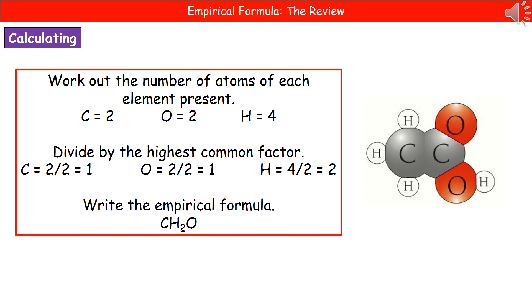Now, they could ask you to work out the empirical formula for one of these. And the way that you do that is, first step, you just need to count up how many of each element are present. So if you look at the actual diagram there, we've got 2 carbons, 2 oxygens, and 4 hydrogens.